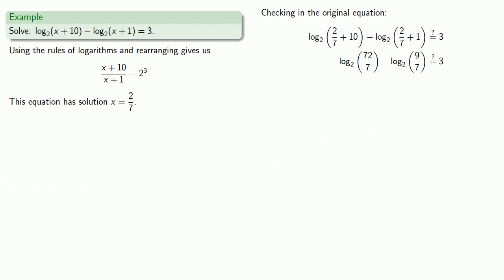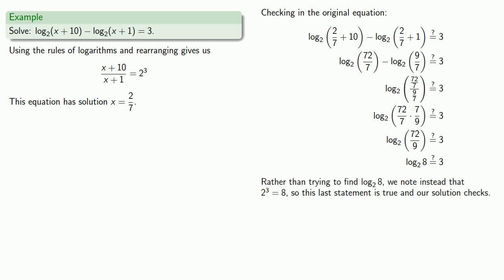Fortunately, we are taking the logs of positive numbers, so we can combine them using the rules of logs. This is the difference of logs. Well, that's the log of a quotient, which we can invert and multiply. Do a little arithmetic. And rather than trying to find the log to base 2 of 8, the thing to remember is the log is the exponent. 2 to power 3 is 8, so this last statement is true, and our solution checks.